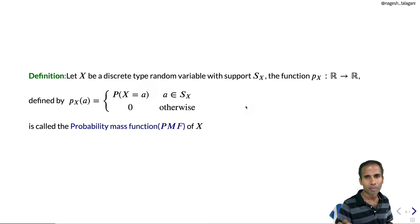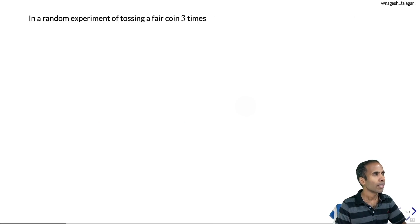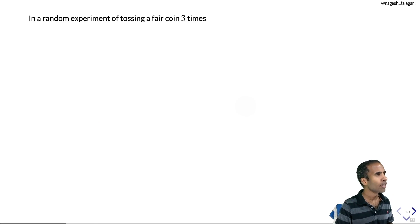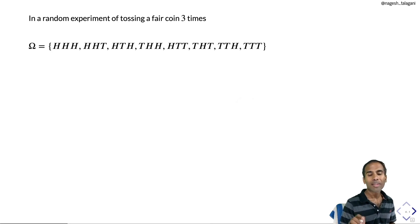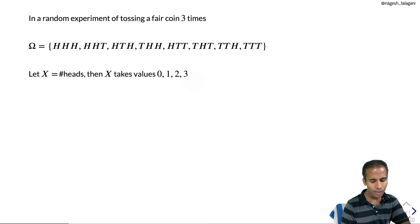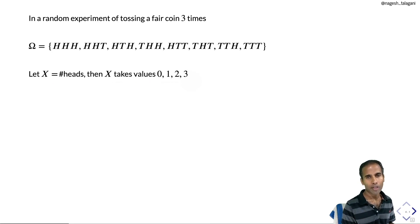Let us look at an example. In a random experiment of tossing a fair coin 3 times, the sample space consists of 8 possible outcomes. Let X denote the number of heads. Then X takes the values 0, 1, 2, 3. Let us try to find the CDF of the random variable X.